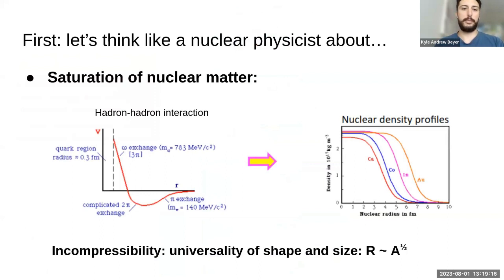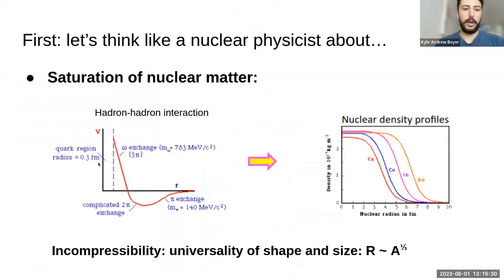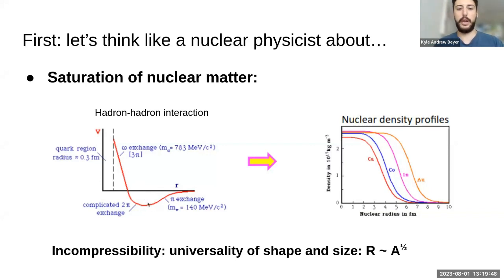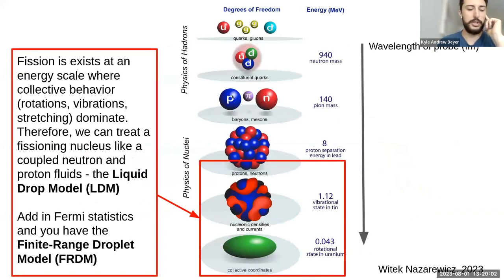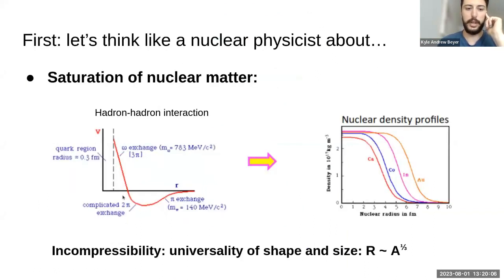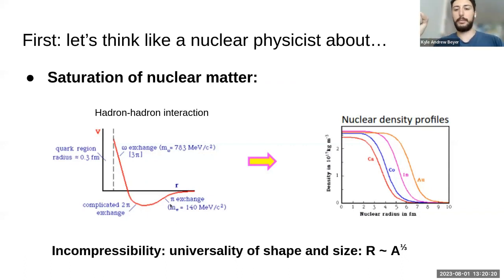Now let's think about the saturation of nuclear matter. Here we have an example of the force between two nucleons — say two neutrons. There's a hardcore repulsion at very short length scales, then this sort of equilibrium point where two nucleons placed next to each other want to be in this low-energy region, and far away they don't feel each other. There are exchanges of force-carrying particles — going back to baryons and mesons — that explain different length scales of this force.